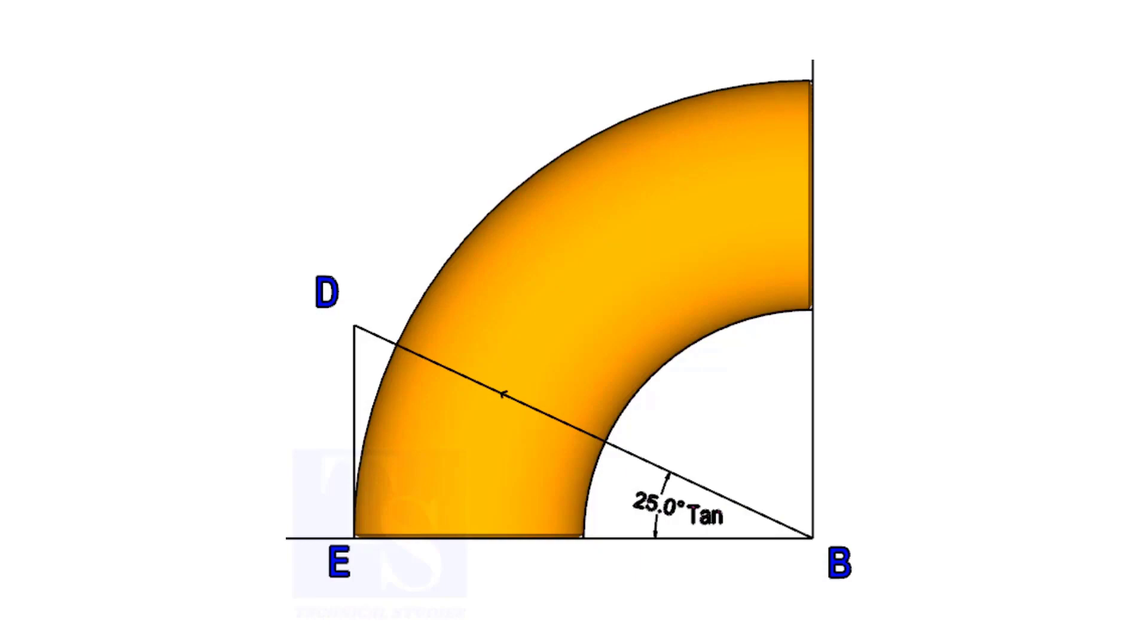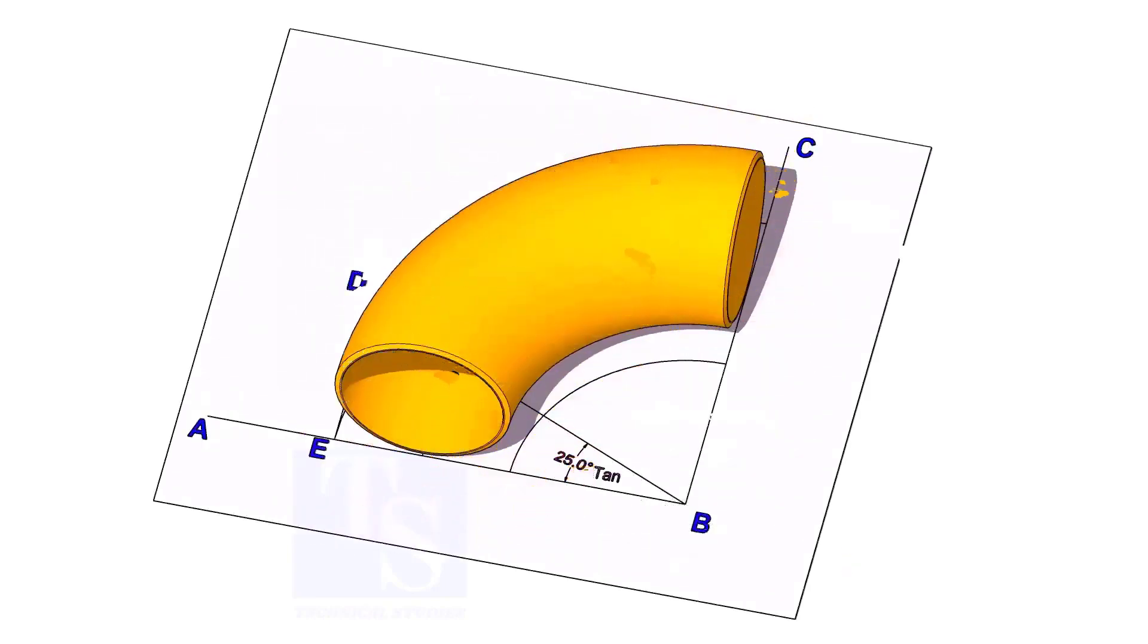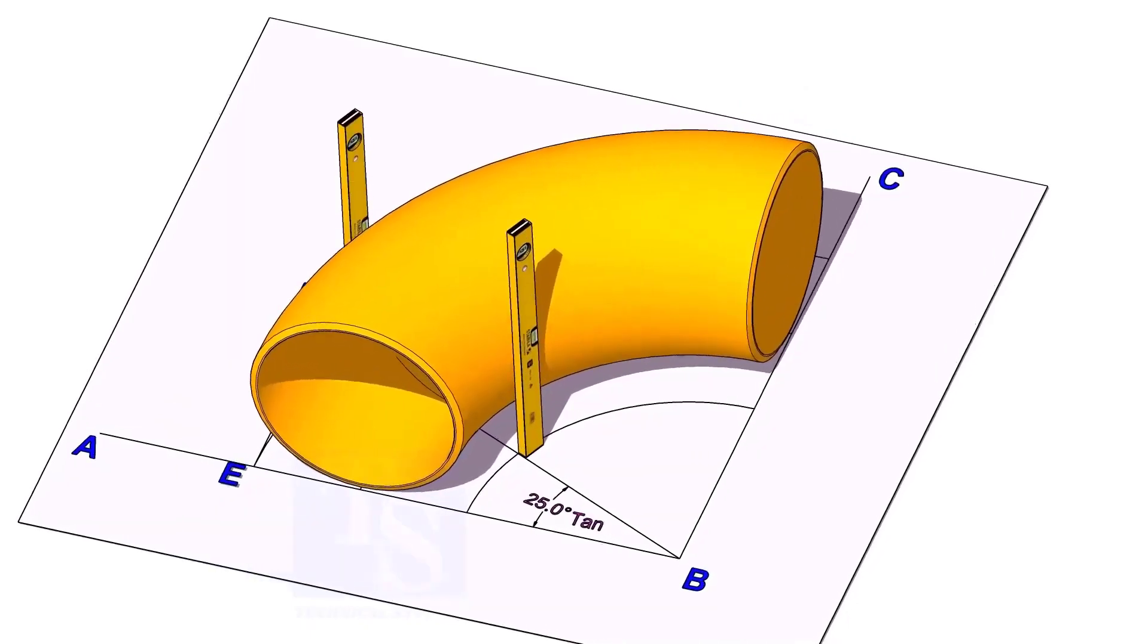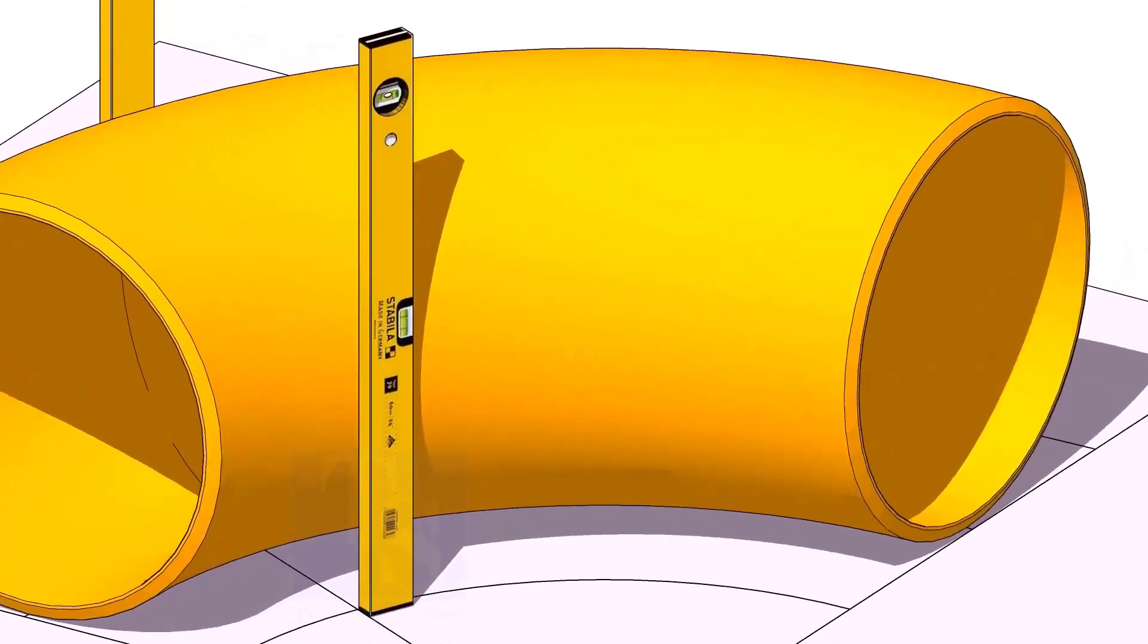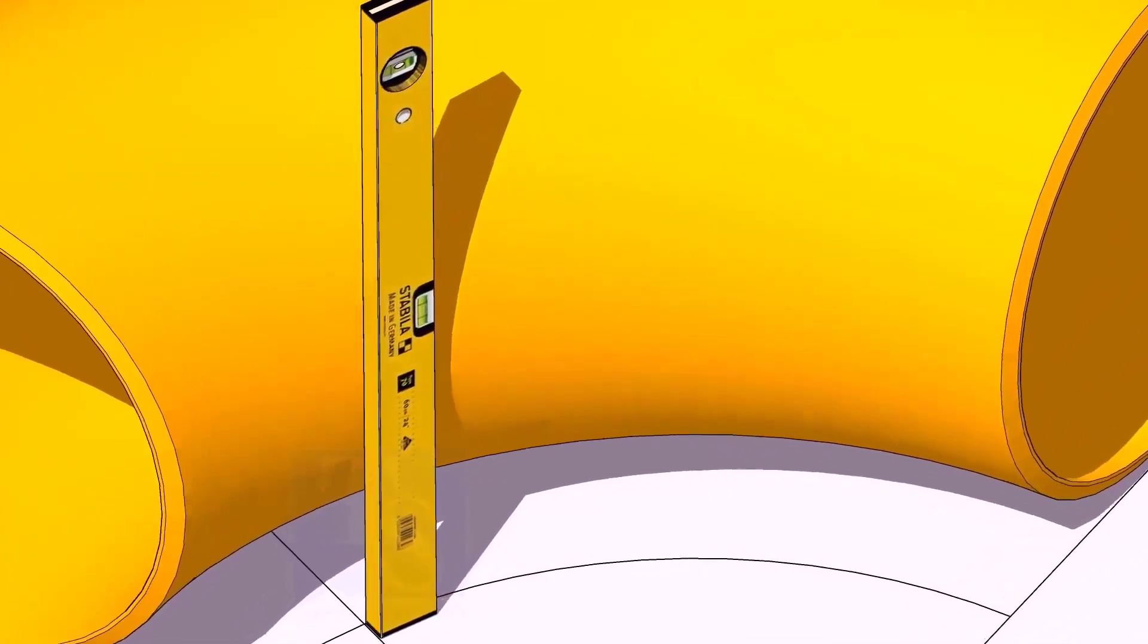Now, put the elbow exactly on the layout as shown. Hold two large level bottles at the edge of the elbow on both sides vertically, and strike a mark where the level bottle edge touches the elbow.